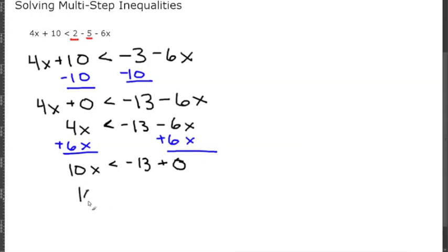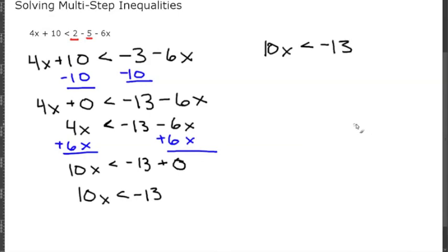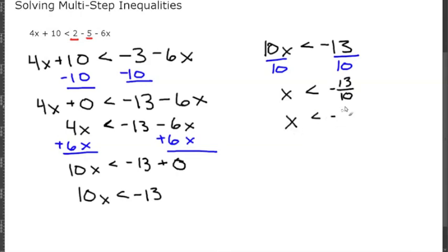So 10X is less than negative 13. Our final step is to divide both sides by 10, giving us X is less than negative 13/10. This cannot be simplified further, but written as a decimal, X is less than negative 1.3. Either answer is acceptable.